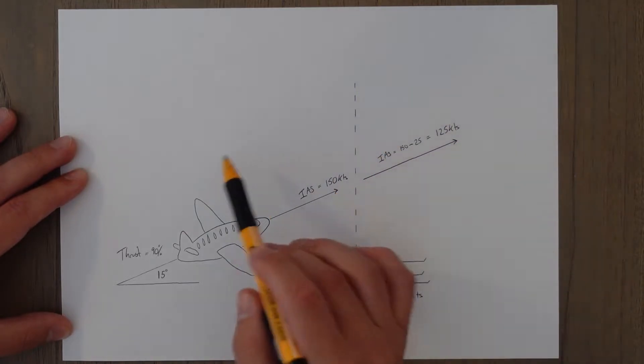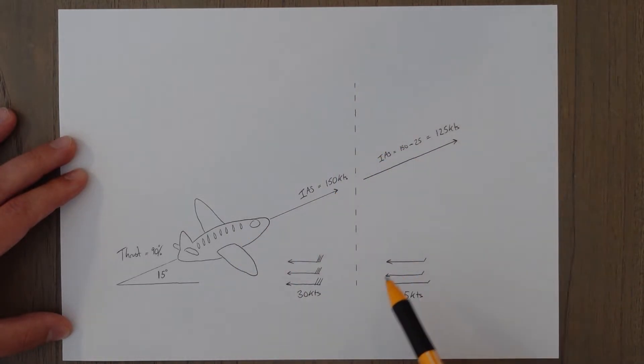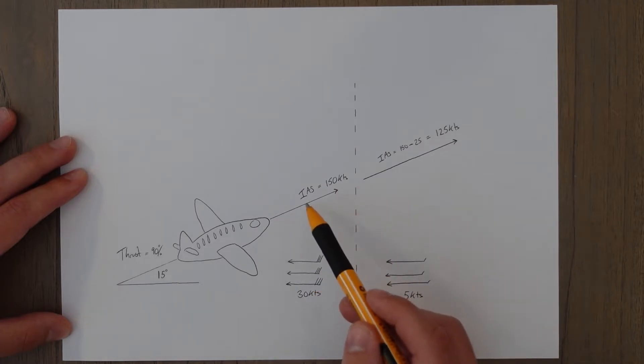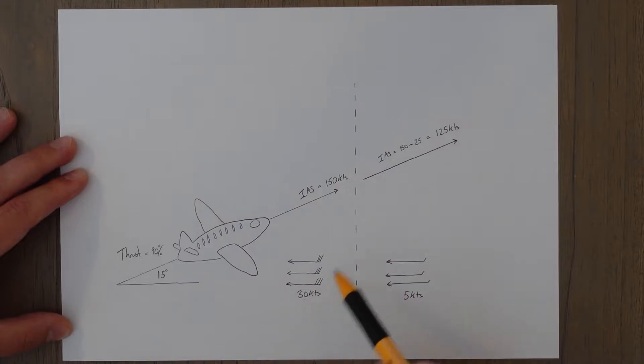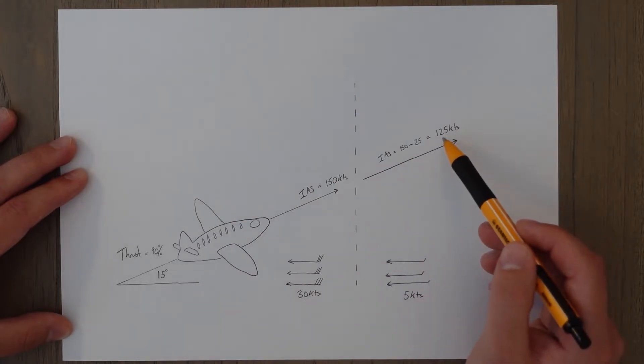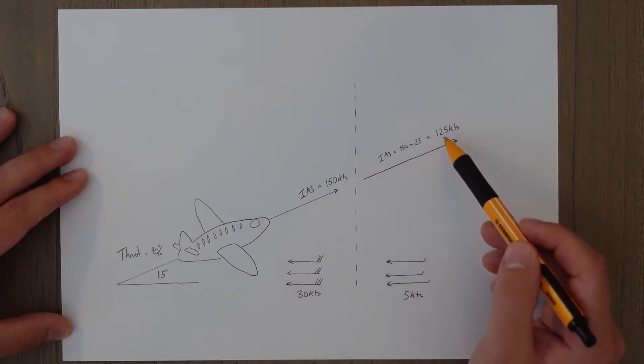We then encounter some horizontal wind shear and the wind suddenly drops off to 5 knots of headwind. So when we're flying along we suddenly go from an indicated airspeed of 150 knots, and then we lose 25 knots of that wind and we're then only going at 125 knots.